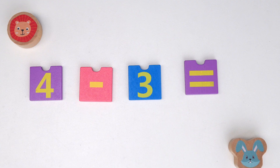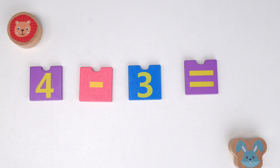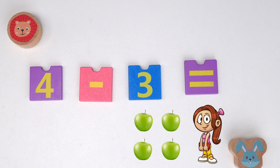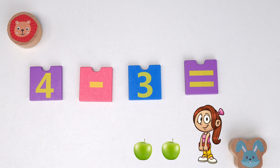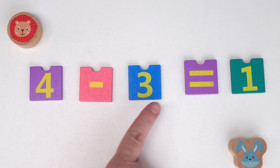Now let's try some subtraction using the minus sign. We use the minus sign when we are subtracting or taking away. For example, here we have four minus three equals. So if you have four apples and you give three of them to your friends, how many apples do you have left? Let's see. Here we have four apples. Now let's subtract: one, two, three. We have one apple left. Four minus three equals one.